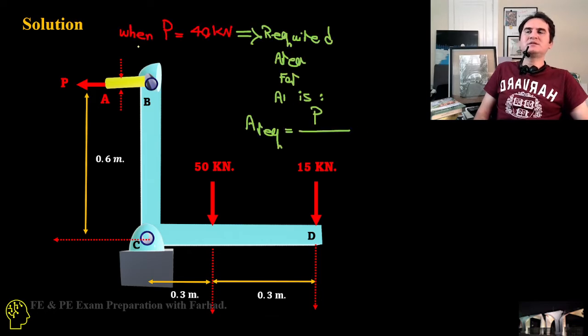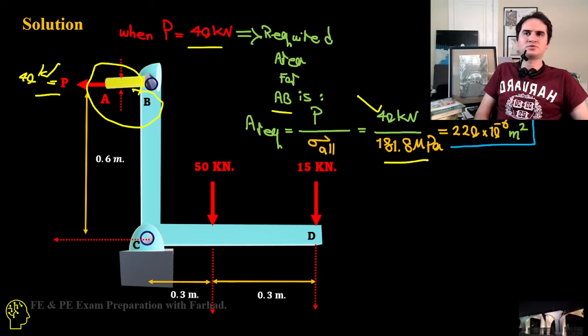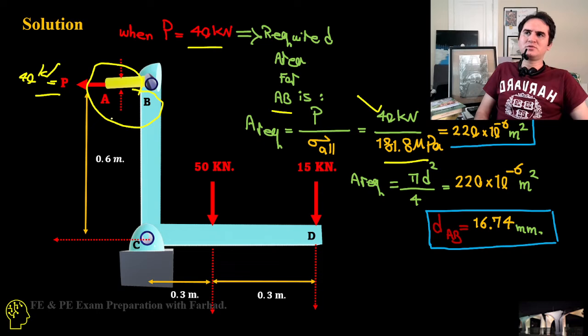In designing, when P is 40 kilonewtons based on our calculation, the required area for AB, for control rod AB, this is our control rod AB, is P over acceptable normal stress. So 40 kilonewtons, which we just calculated, gives us 220×10^-6 meters squared area required for control rod. For area equals a quarter of pi D squared, this gives us a diameter of control rod equal to 16.74 millimeters.